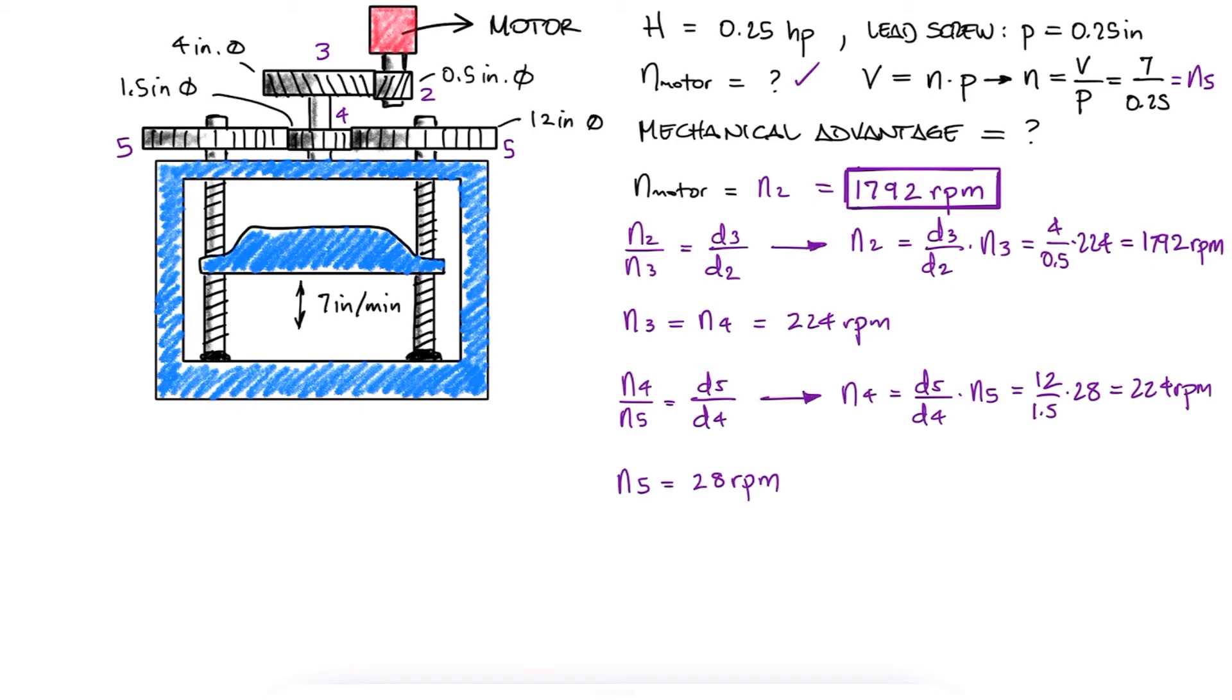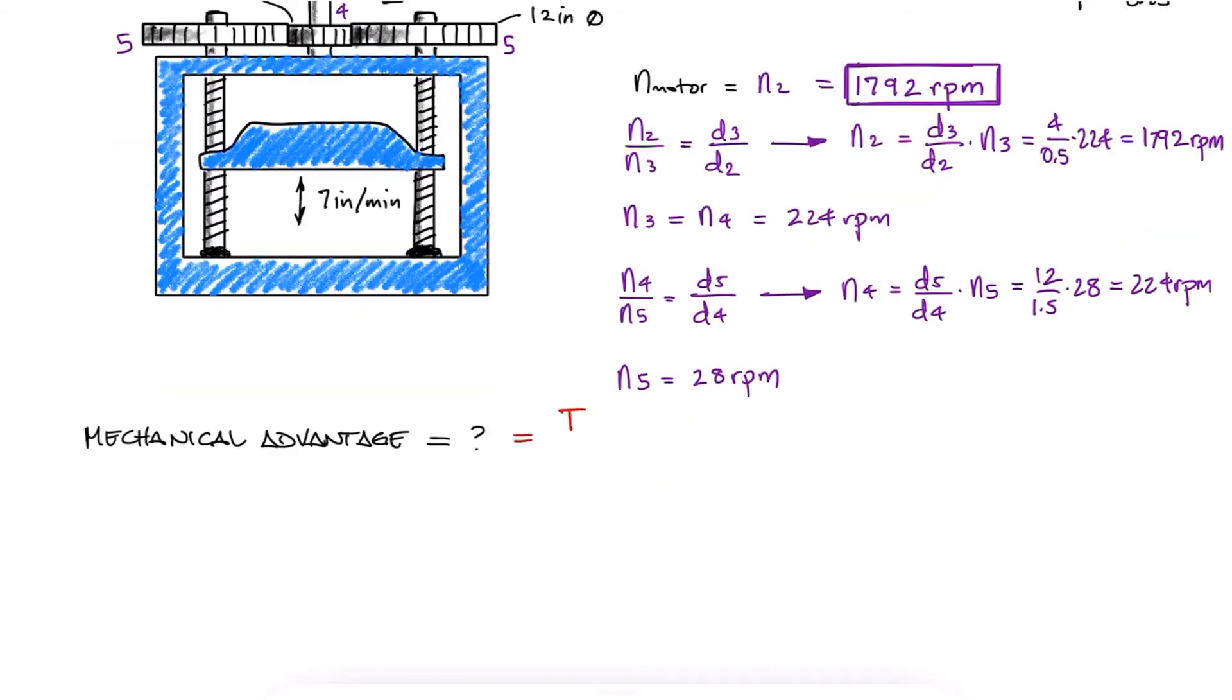For a gear system, the mechanical advantage is defined as the output torque over the input torque.